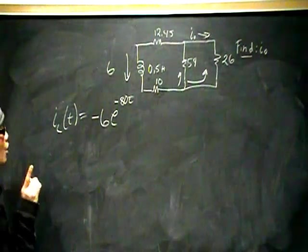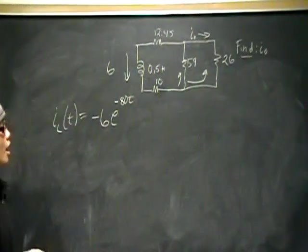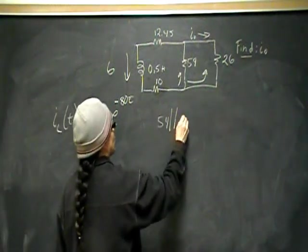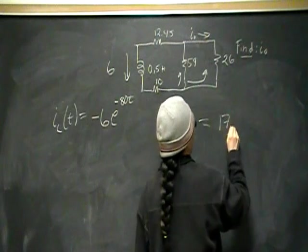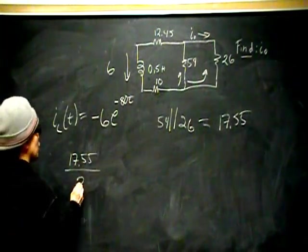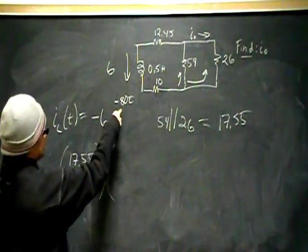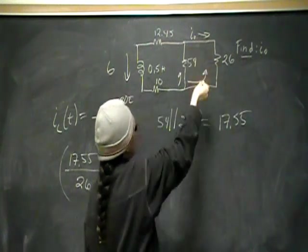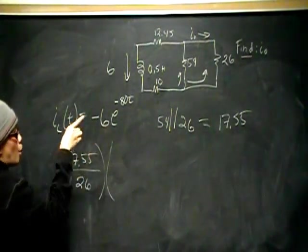So how do we, so we use current division again. Current division says that the 6 amps will split between these two branches from the equivalent resistance divided by the branch that we're interested in. So 54 in parallel with 26, that is going to be an REQ of 17.55. Use current division. Current division says take that 17.55 over the branch that I'm interested in, which is 26. Multiplied by, we're not going to multiply by negative 6e to the negative 80. The reason is we're looking for I0. I0 is shown to be going in that direction, in the opposite direction.